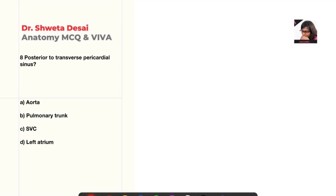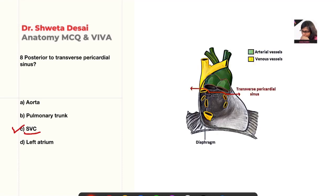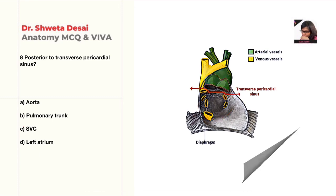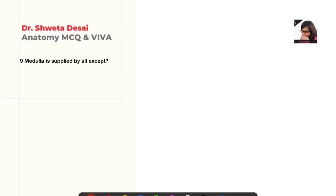Next: what lies posterior to the transverse pericardial sinus — aorta, pulmonary trunk, or superior vena cava as seen in the left atrium? The correct answer is C, superior vena cava. The transverse pericardial sinus lies between the arterial trunk and the venous tube.